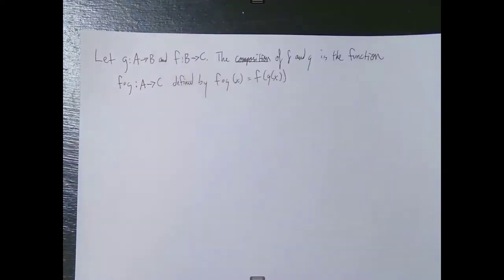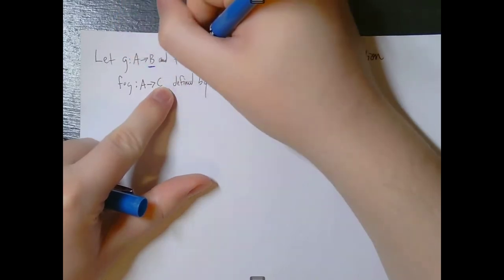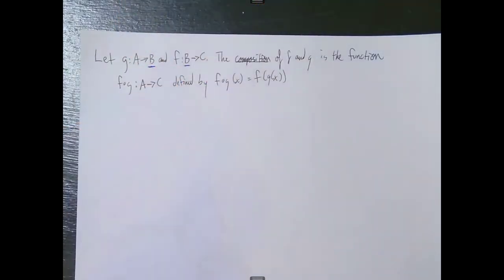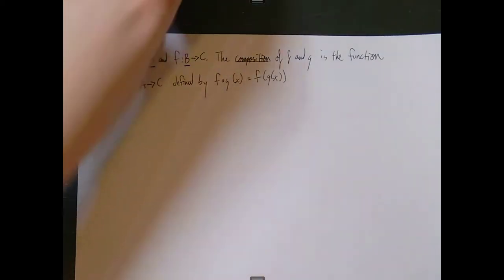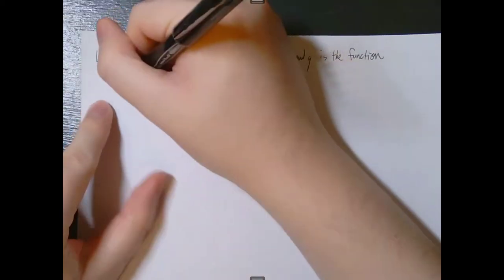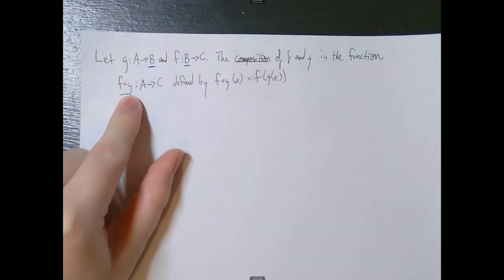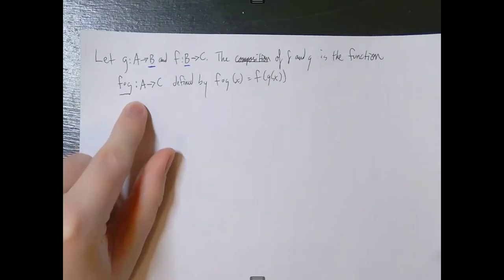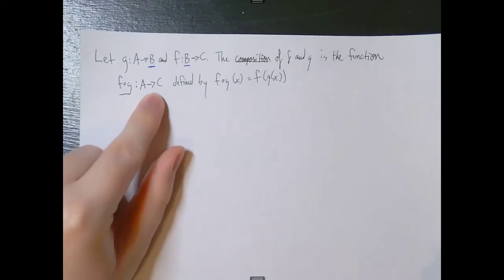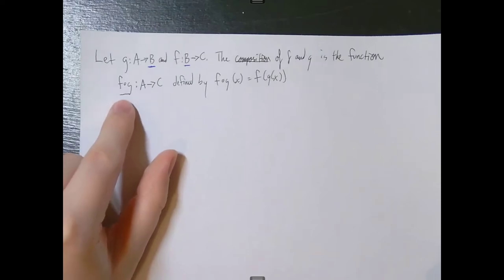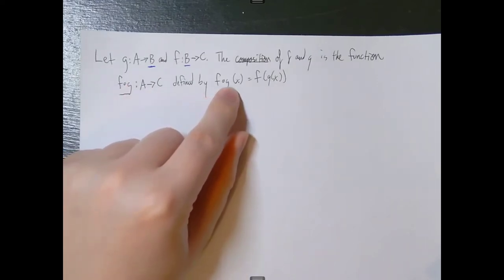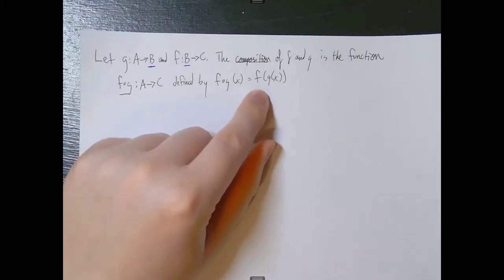Notice that g's codomain is the same thing as f's domain — that's going to be pretty important here. The composition of f and g is the function f composed with g, which takes elements from A and maps them to elements in C. The domain here is A, the codomain is C, and f∘g is defined by: if we apply f∘g to x, it's the same thing as taking f applied to g of x.